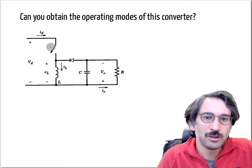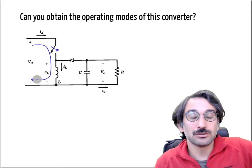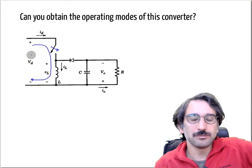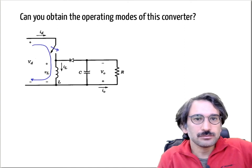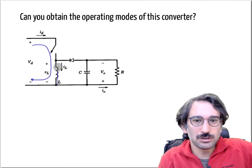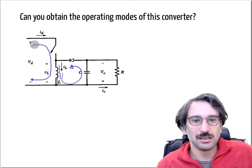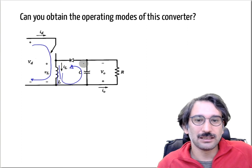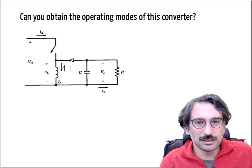It looks like the boost converter in the way that if you turn on that switch, the inductor will be charged with Vd. Once the switch is opened and that current is cut, it has to go somewhere. So in a way it looks like the boost converter where you first charge the inductor and then send that inductor current to charge the capacitor, but the orientations are quite different.